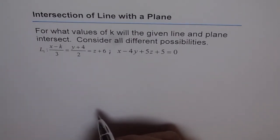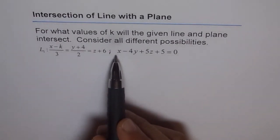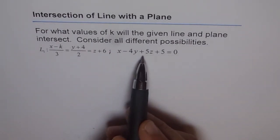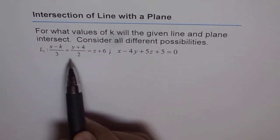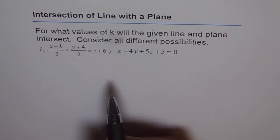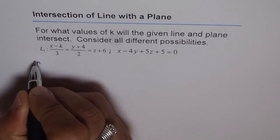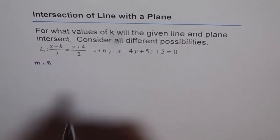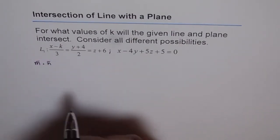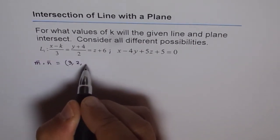For that, we can first look at the normal of the plane, which is (1, −4, 5), and the direction vector of the line is (3, 2, 1). So we can check m dot n, which will give us an idea whether the line is on the plane or not. The direction vector m of the line is (3, 2, 1).